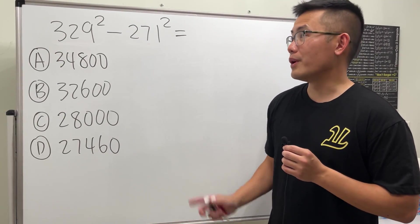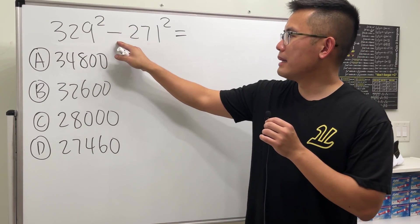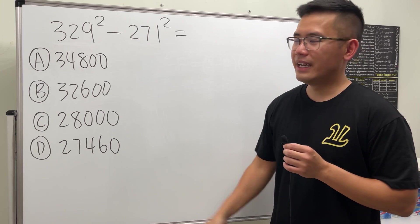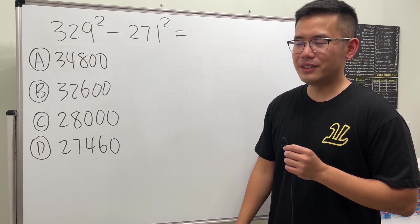Okay, let's see if you guys can do this question without using a calculator. We have 329 squared minus 271 squared, and I gave you guys the options here already. So go ahead and pause the video and try this first.